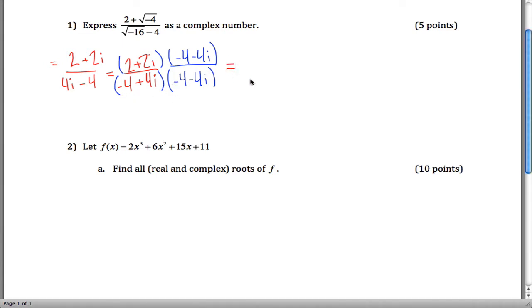So on the bottom here, negative 4 times negative 4 is positive 16. The inner and the outer terms will cancel out when we FOIL. And we'll get minus 16i squared.